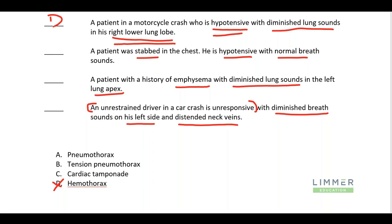The patient stabbed in the chest is hypotensive and has normal breath sounds. What would cause hypotension with normal breath sounds? The fact that he's stabbed is a clue. Both pneumothorax and tension pneumothorax wouldn't have normal breath sounds. He's hypotensive, which fits with tamponade. And being stabbed in the chest is one of the leading causes of tamponade. So we've got cardiac tamponade here.